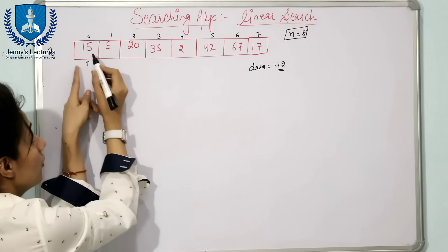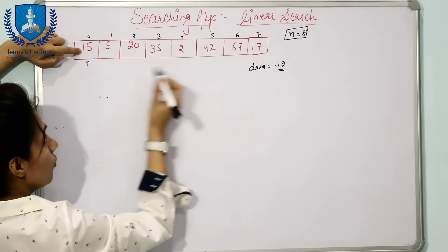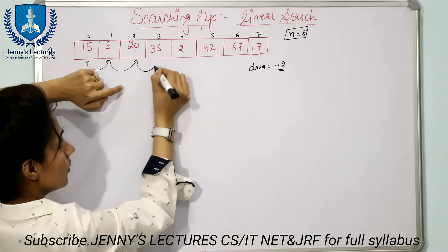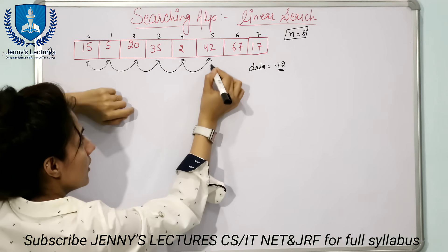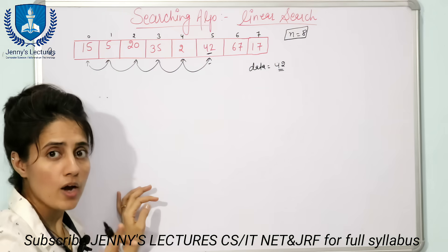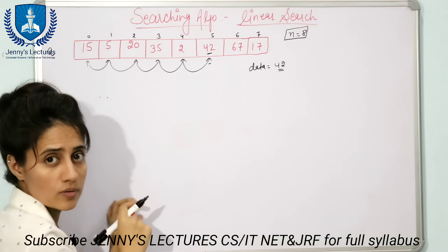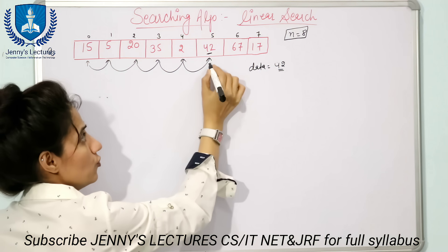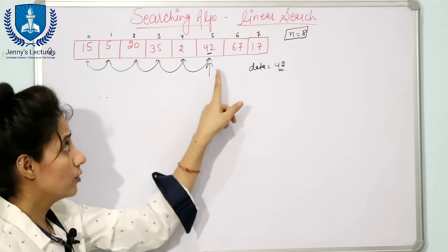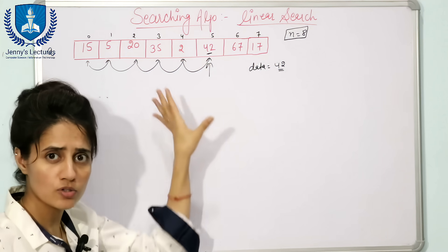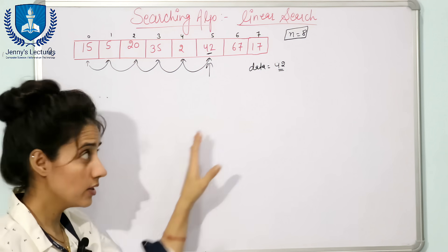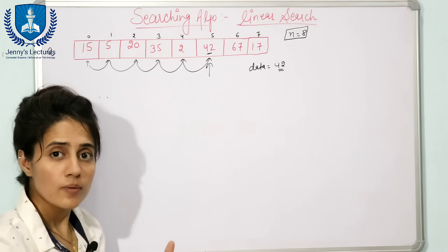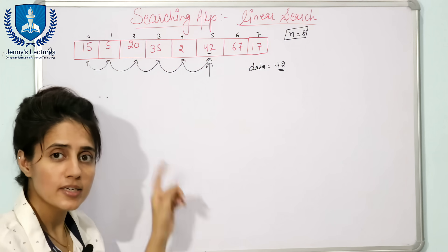For searching 42, we start from the beginning: 15 — is this 42? No. Move to next. Not 42, not 42, keep going. Here we find 42. Now there are two stopping conditions. First: you found the element — we found 42 here, so we stop and the algorithm returns index 5, that 42 is present at index 5.